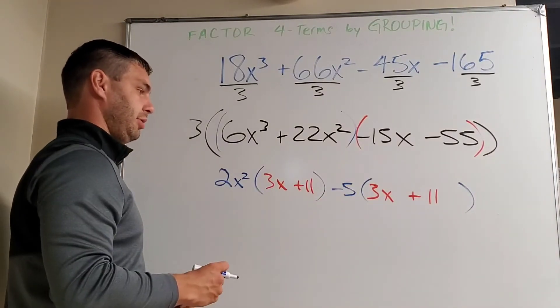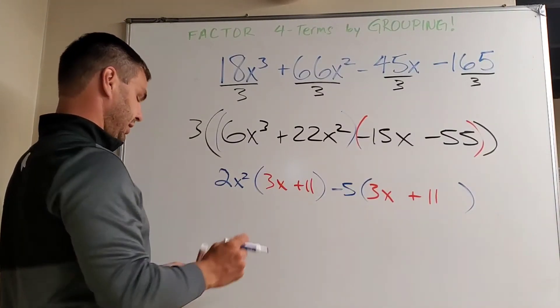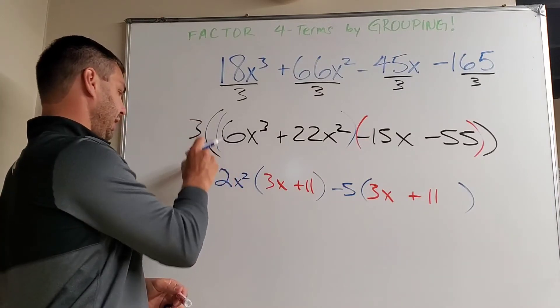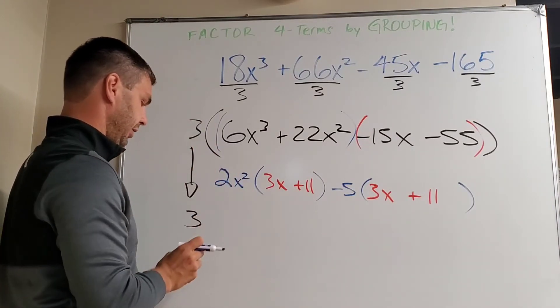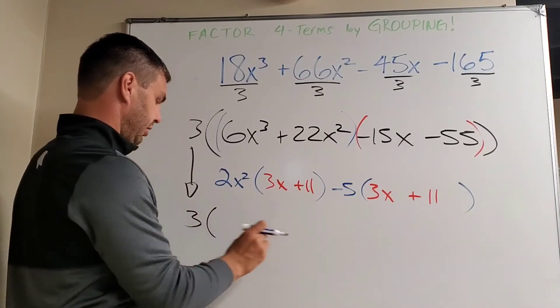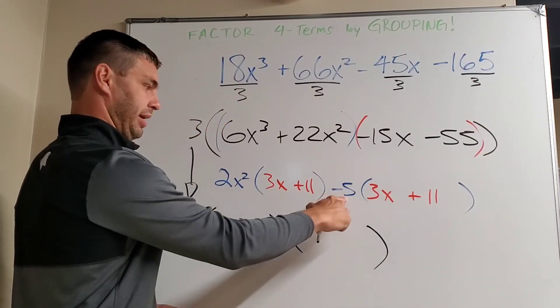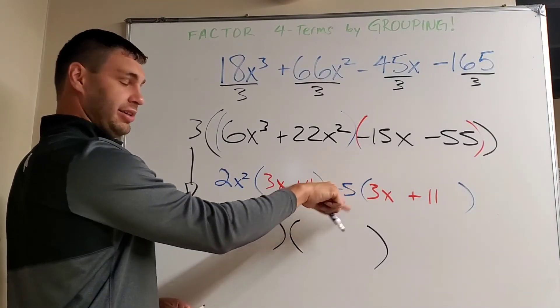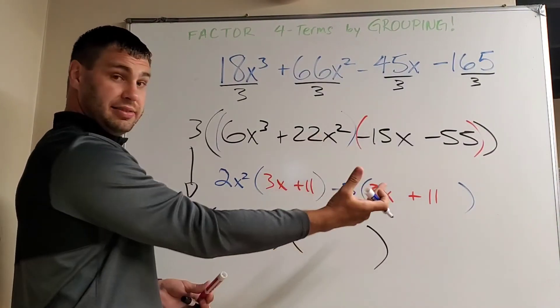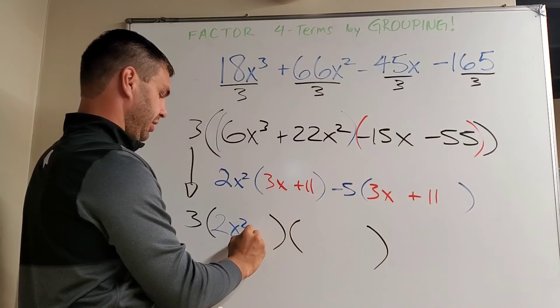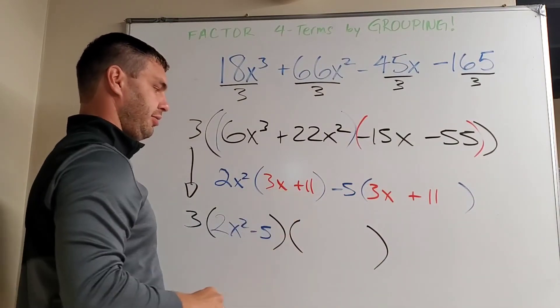Now, the way you write your answer is you're going to take your GCF from out front, write that first, and then take your blue group, 2x squared minus 5. If this had just a regular 5 there with no sign, you'd put positive 5, but since it's negative, we can put negative 5.